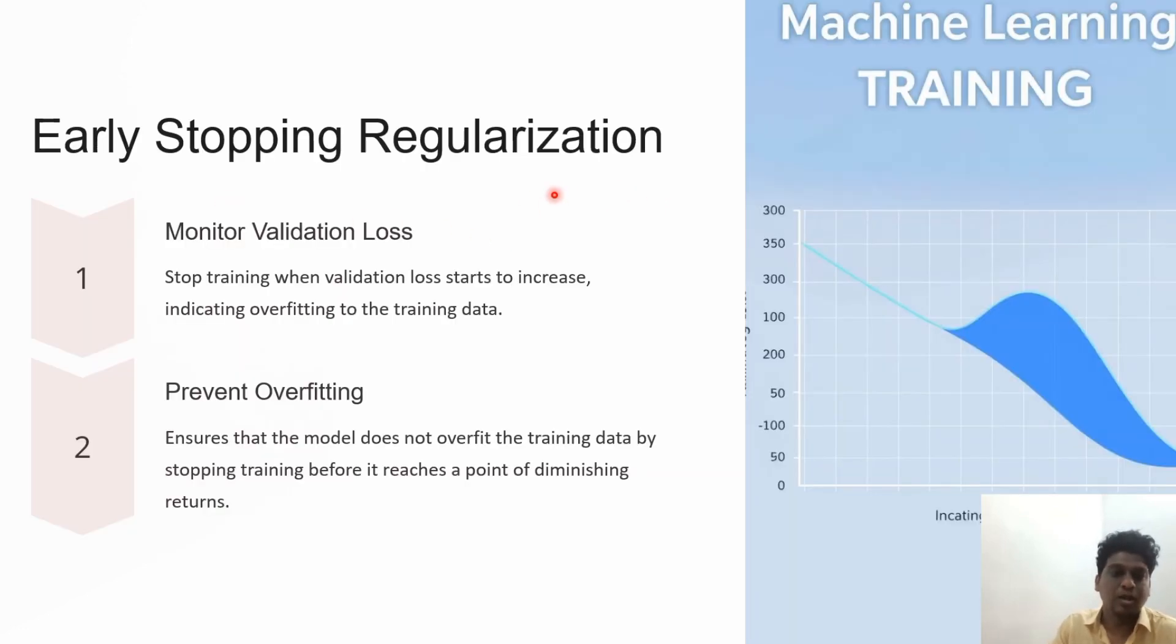Early stopping regularization: monitor the validation loss. When validation loss starts increasing, it indicates overfitting, so stop training at that point. This prevents the model from overfitting by stopping when it reaches diminishing returns.